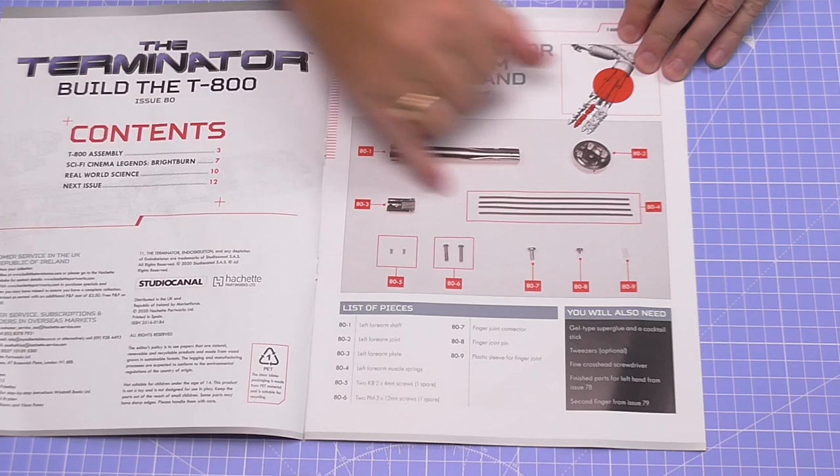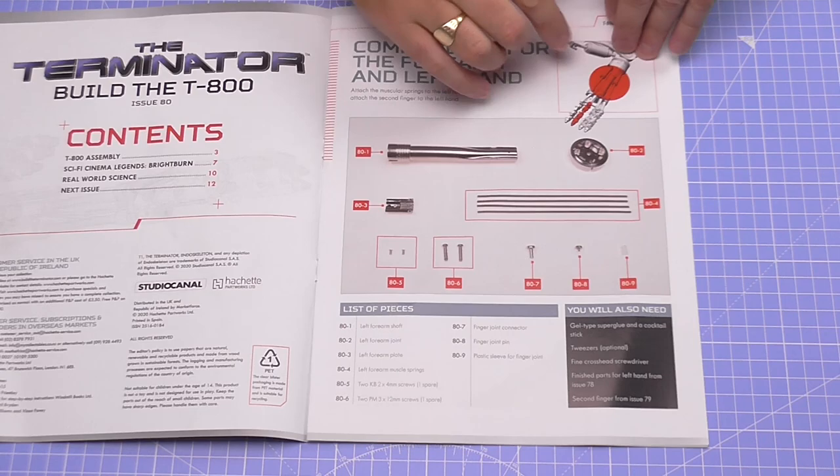Let's show you what we got to do. As you can see we've got all the springs here. Everything is in the pack. We're going to be doing the tendons and the springs and we're also going to be fitting one of the fingers.